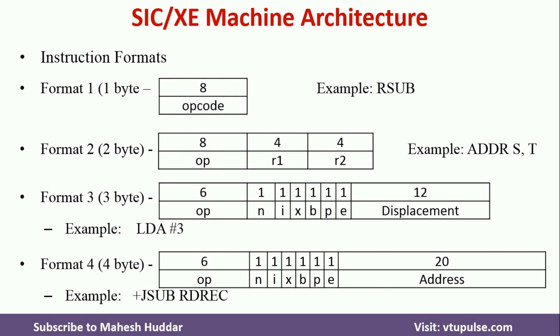To make it easy I will briefly discuss about these instruction formats and then we will go with addressing modes. There are four formats available in SIC-XE. The size of format 1 is one byte and it contains only opcode. The example for this one is RSUB. It does not have any operand — the number of bits required to represent RSUB is equivalent to eight bits.